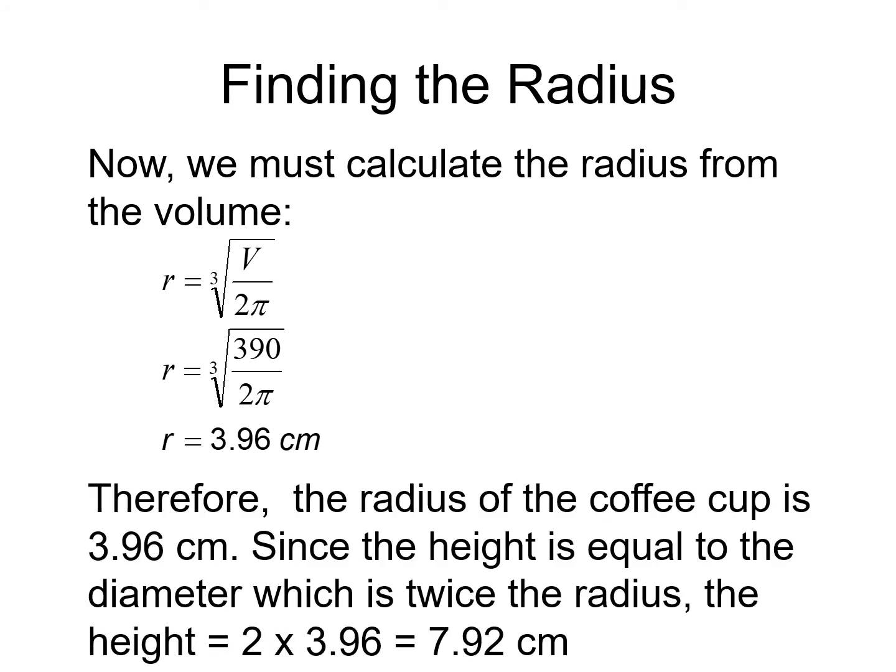Therefore, the radius of the coffee cup is 3.96 centimeters. Since the height is equal to the diameter, and the diameter is twice the radius, the height would be 2 times 3.96, which is 7.92 centimeters.